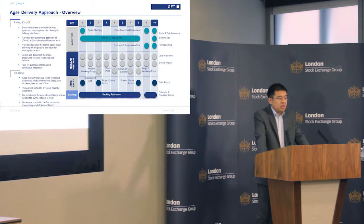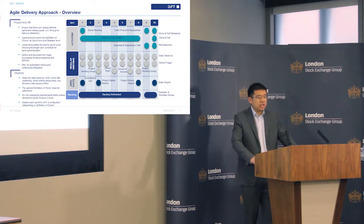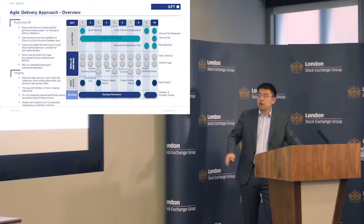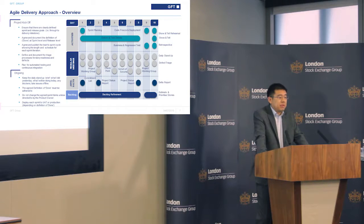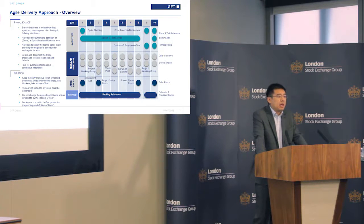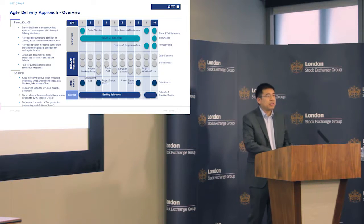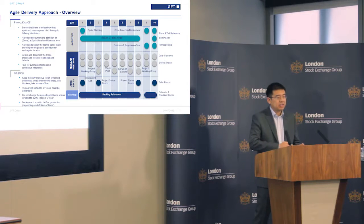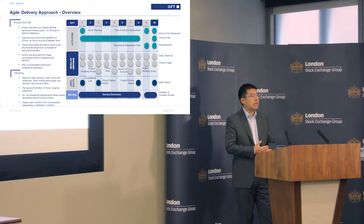Moving on to the Agile framework and delivery approach — different organizations have their interpretations of Agile. In GFT, this is the framework we roll out and have been helping clients build systems with. A product backlog is created and maintained with all user stories, technical tasks, enhancements, defects, and change requests. It is constantly prioritized throughout the sprint lifecycle.